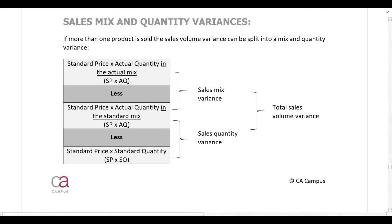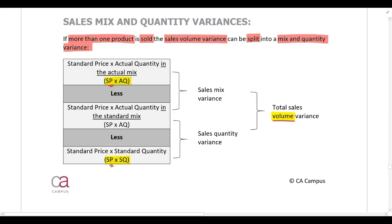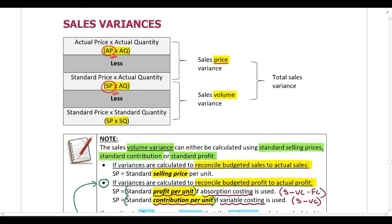If the company sells more than one product, the sales volume variance can be split into a mix and quantity variance. We know that for the volume variance we compare the standard price multiplied by the actual quantity to the standard price multiplied by the standard quantity — we keep the price the same and only change the quantity, and that gives us the volume variance.